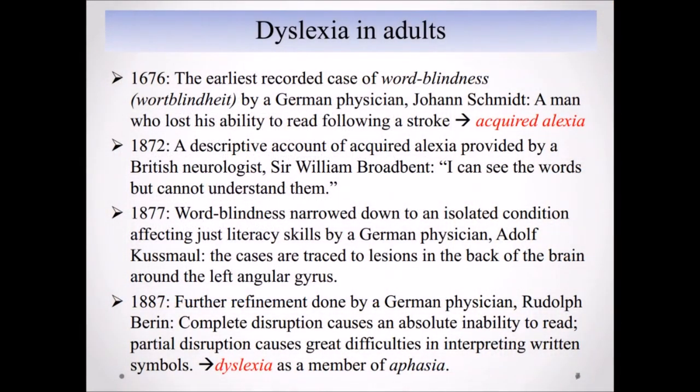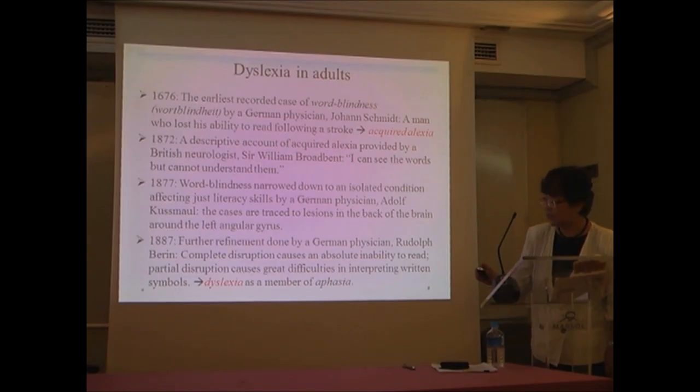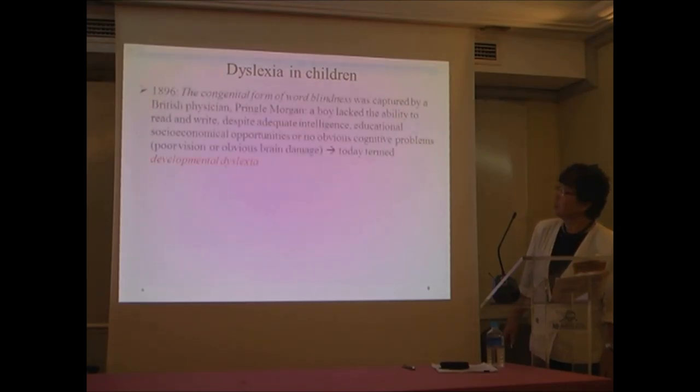In 1887, further refinement was done by another German physician, Rudolf Berlin. He completed a description that causes an absolute inability to read, and a partial disruption causes great difficulties in interpreting written symbols. And this was later named dyslexia. So it was a partial disruption is what our concern is.